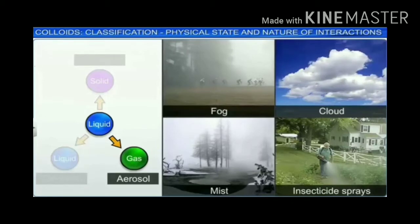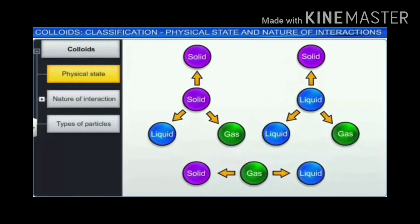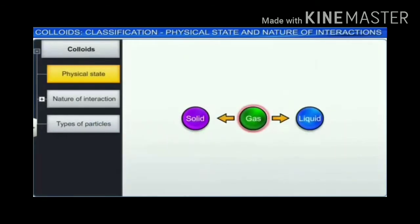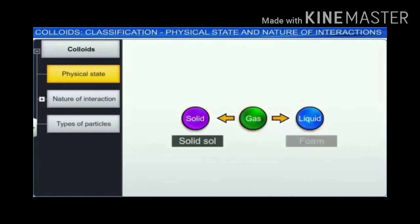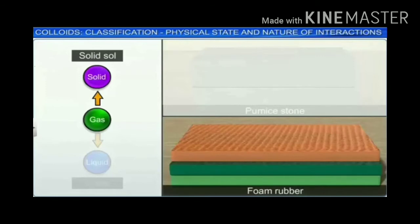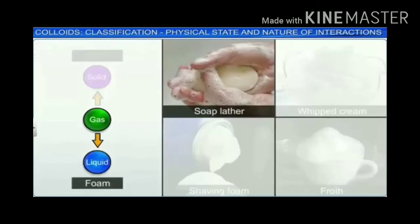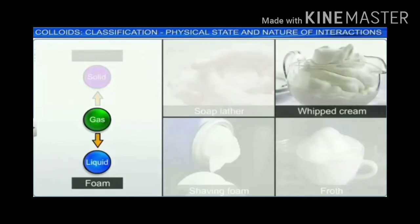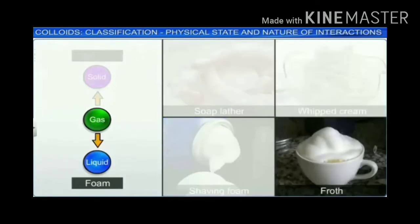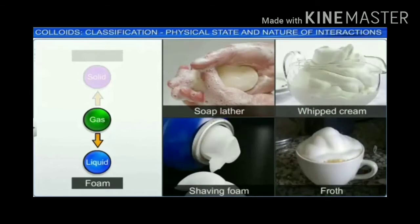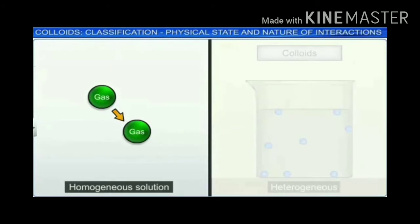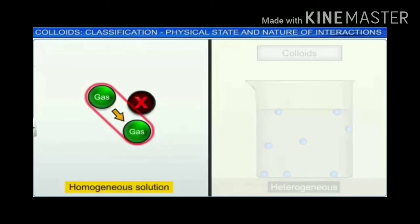Dispersion of a gas in a solid or liquid dispersion medium results in the formation of solid foam and foam respectively. Examples of solid foam are pumice stone and foam rubber, while soap lather, whipped cream, shaving foam, and froth are examples of foam. It is important to note that a colloidal system of a gas dispersed into another gas is not possible because gases always form a homogeneous solution; since colloidal systems are heterogeneous, they cannot be obtained by dispersing gas into another gas.